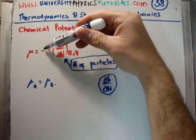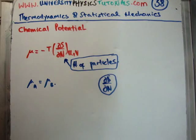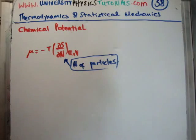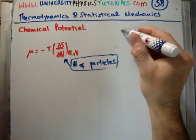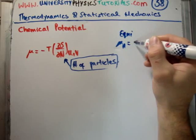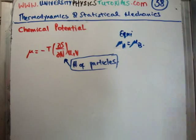As a result, it's going to want to receive particles. It's going to want a flux of particles into it. But at equilibrium, the chemical potential of A is equal to the chemical potential of B, by definition.